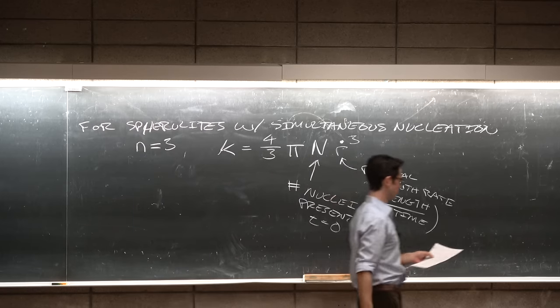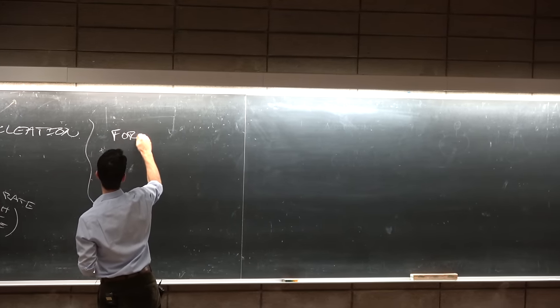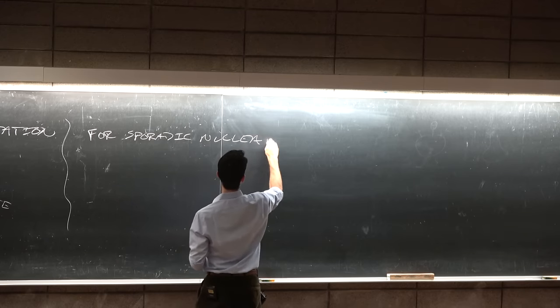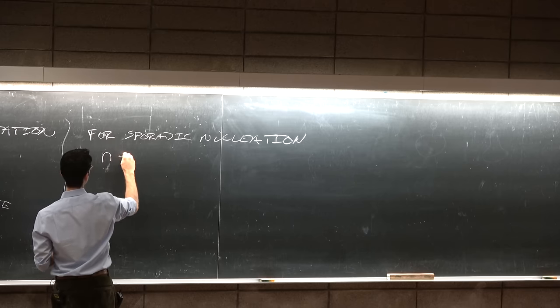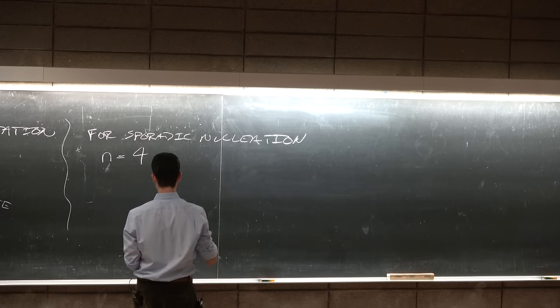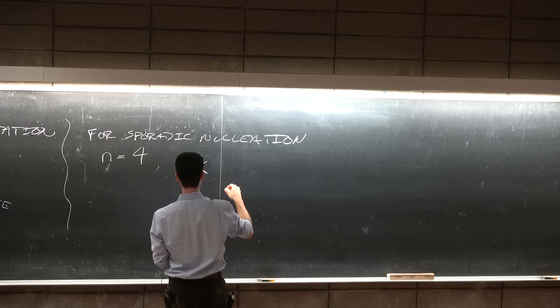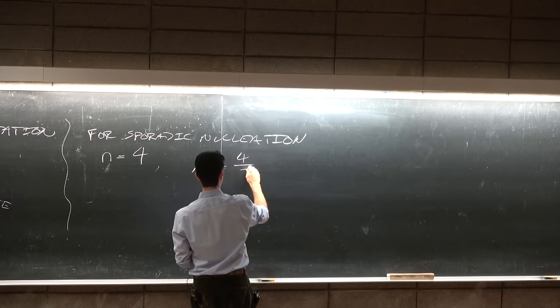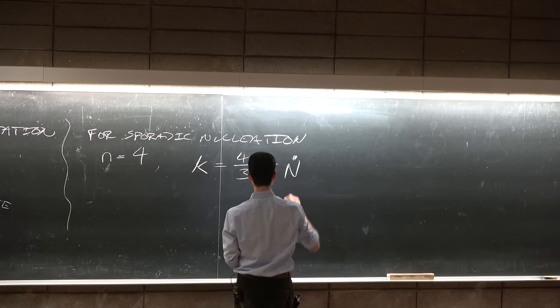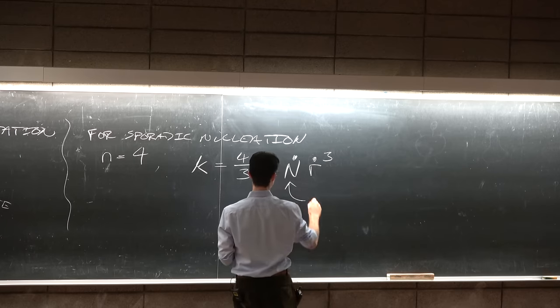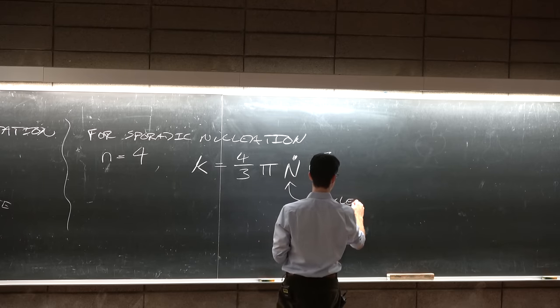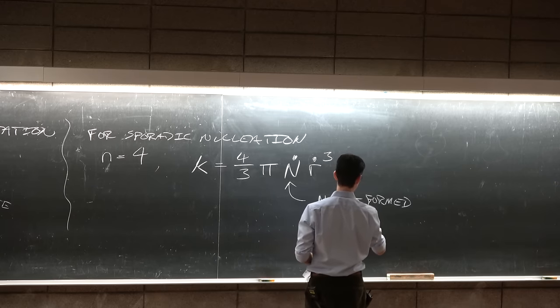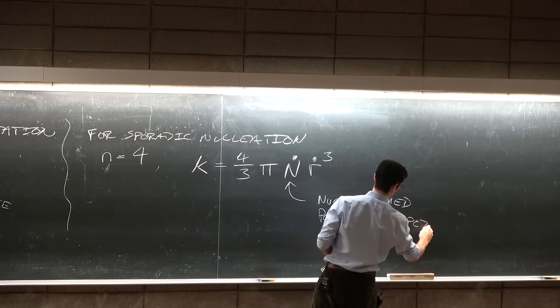We have a different equation for sporadic nucleation and it differs in two ways. One of the ways in which it differs is that our Avrami exponent n is now 4 and also k depends on the rate of formation of nuclei: 4 thirds pi n dot r dot cubed, where n dot is the nuclei formed per volume, unit volume, per unit time.